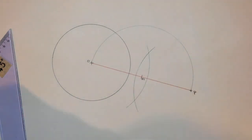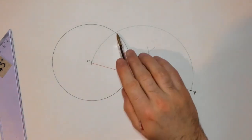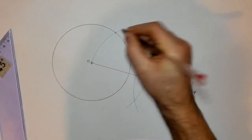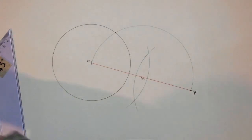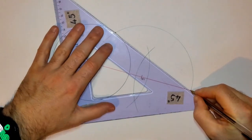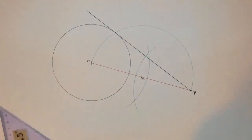Where that semicircle intersects my original circle is my point of contact for my tangents. And now I can draw that to the point of contact, and I have my tangents.